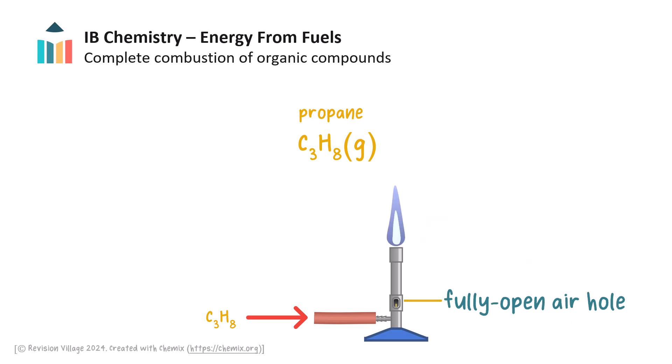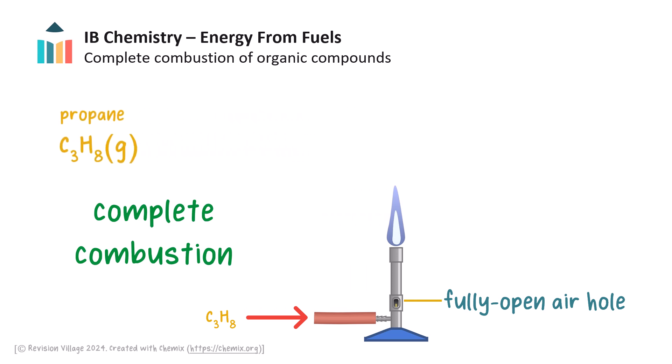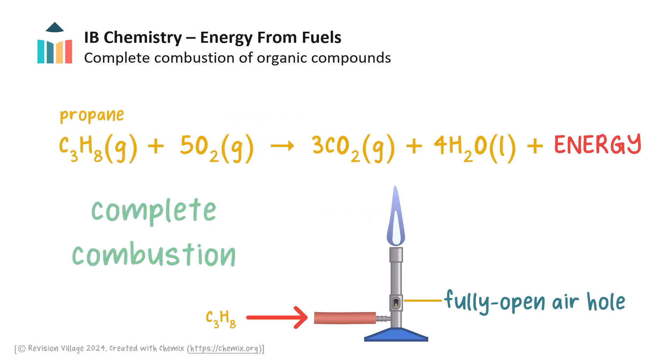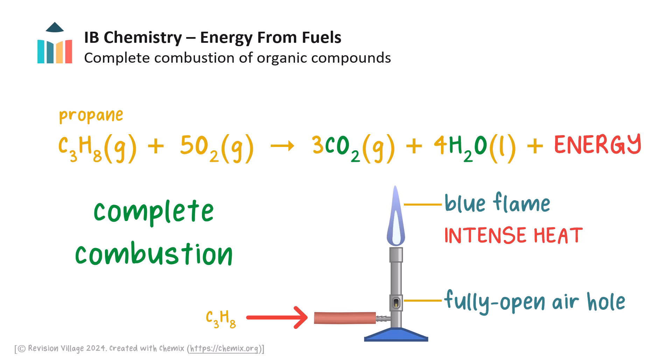If there is sufficient or excess oxygen gas present, for example by fully opening the air hole, then this reaction occurs and the combustion is said to be complete. The only products of complete combustion are carbon dioxide and water. The flame will burn blue and cleanly, giving off no smoke or soot, and will generate intense heat.